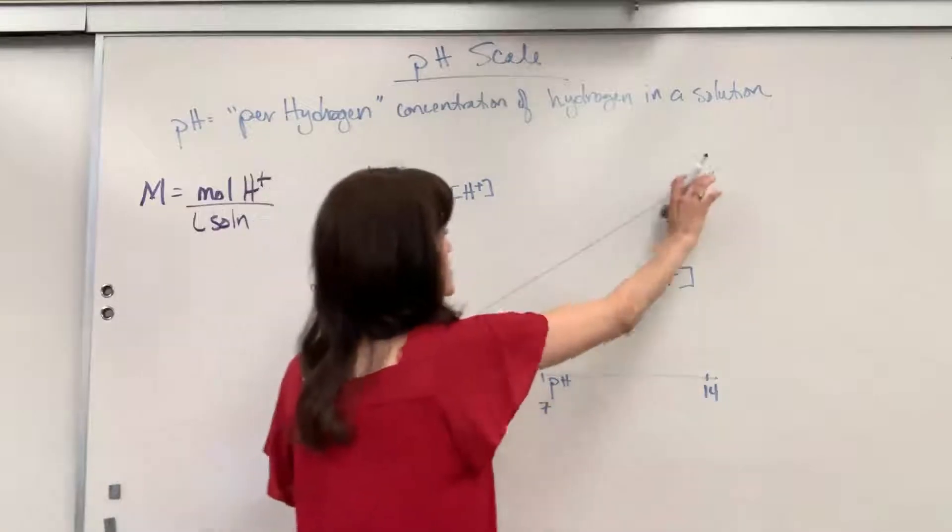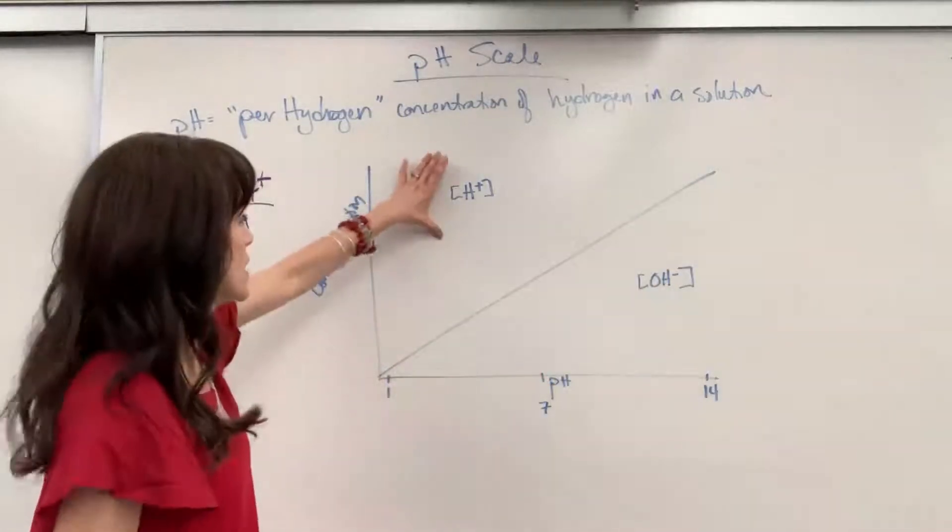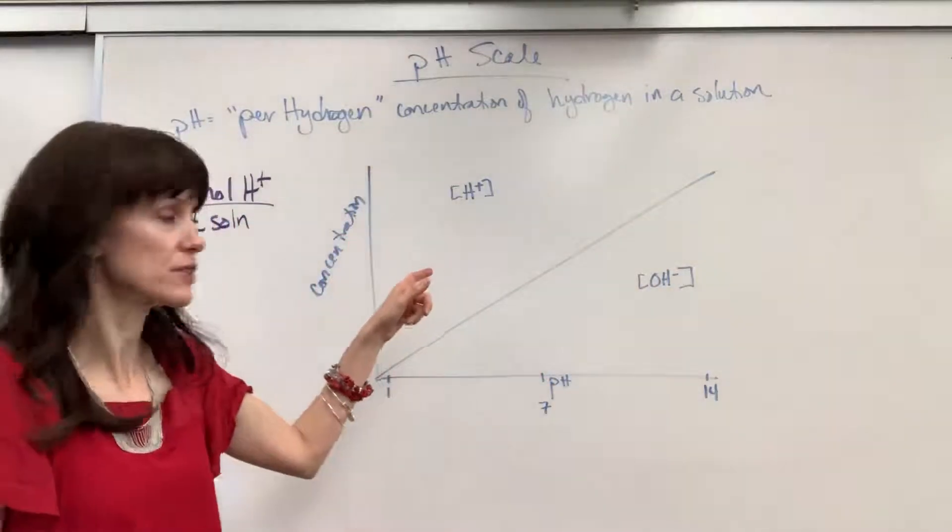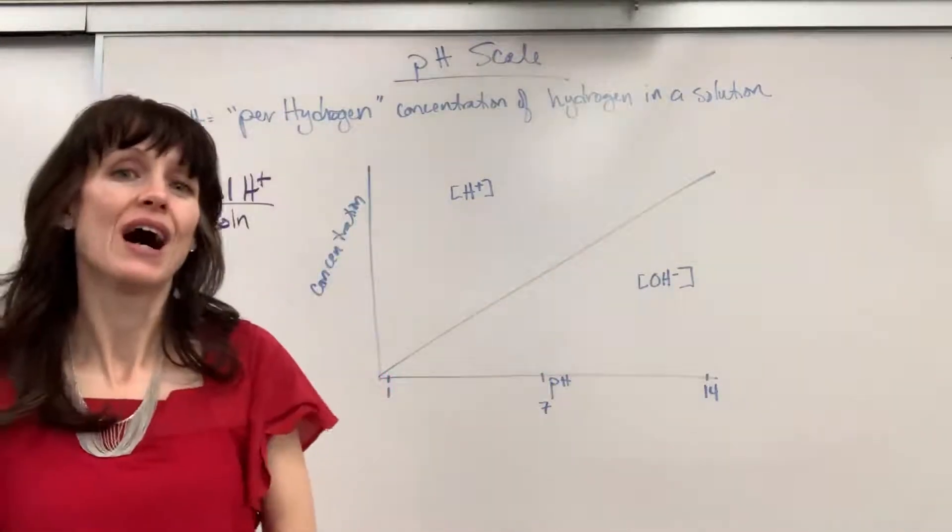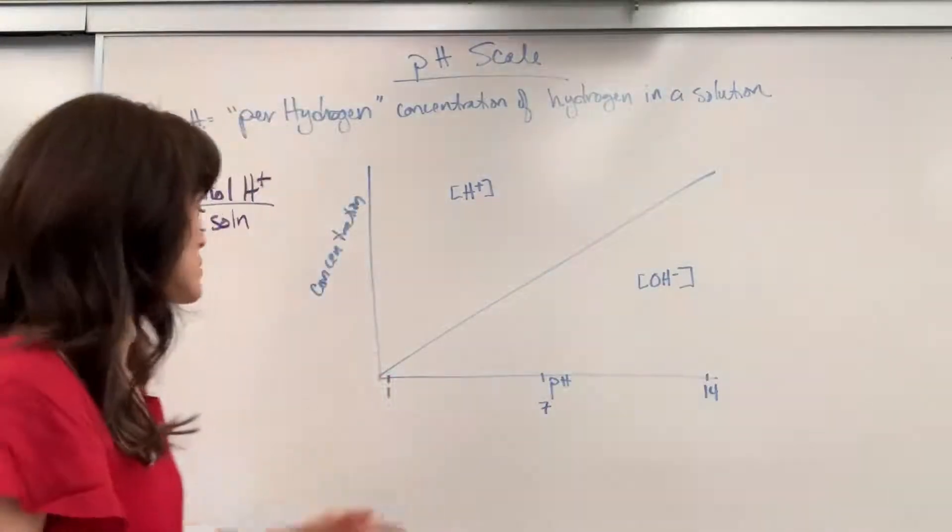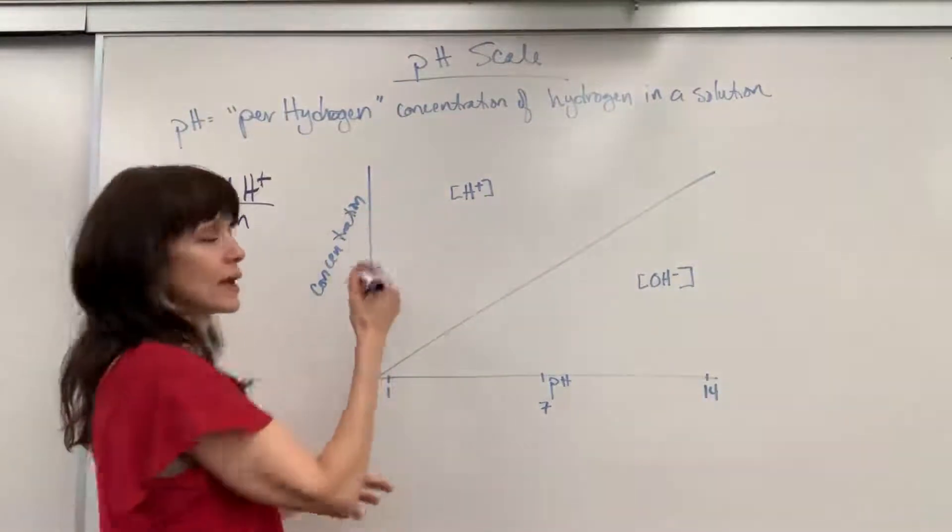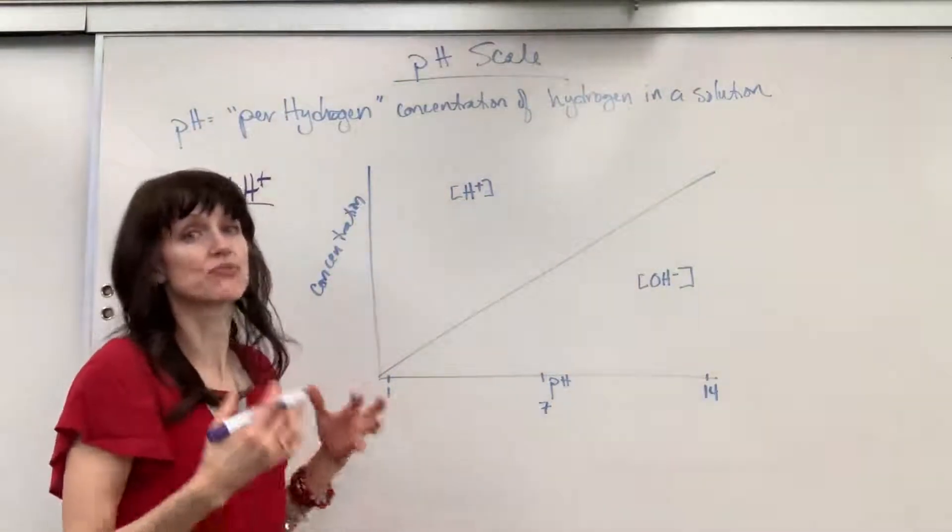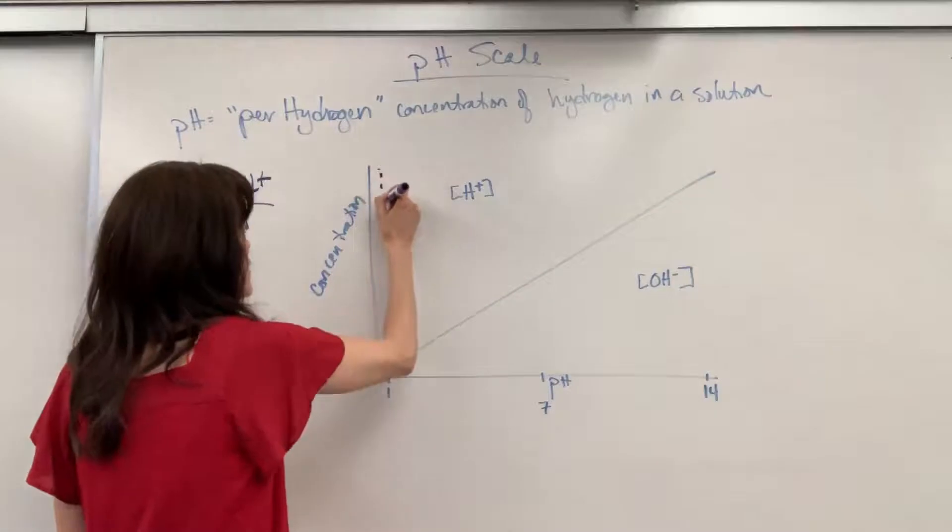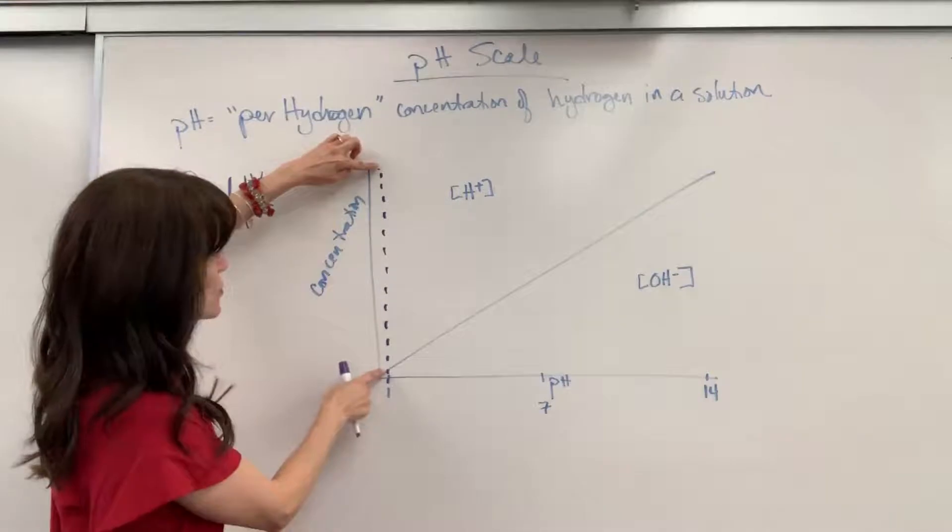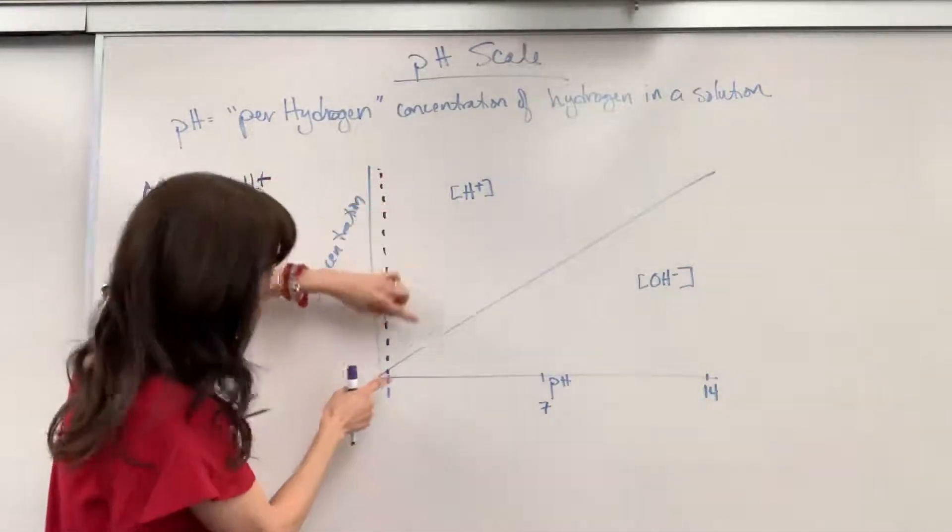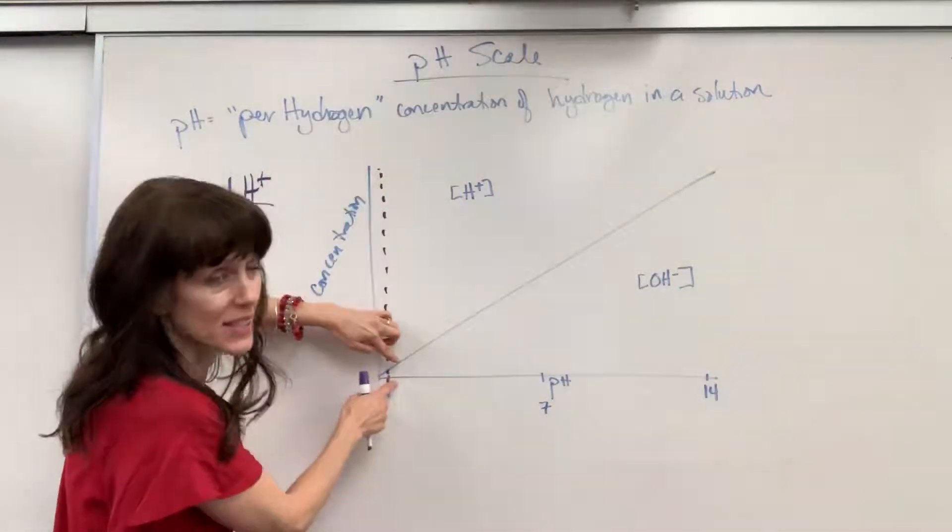Notice how I divided this graph in half. Up top we're going to have the concentration of hydrogen and then this bottom piece is going to be the concentration of hydroxide. So if we are at a pH of 1, I'm going to put a dashed line so that you can make this really visual and see it. If we are at a pH of 1, check this out, the amount of hydrogen is significantly greater than the amount of hydroxide.